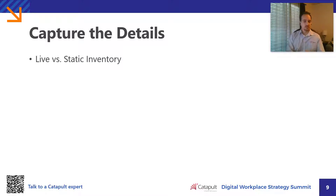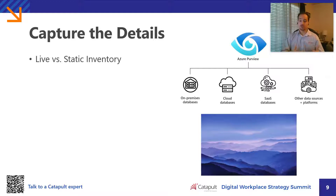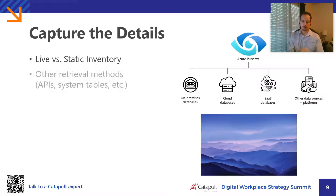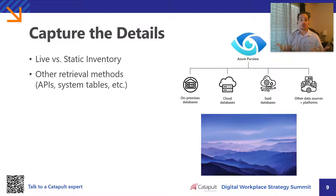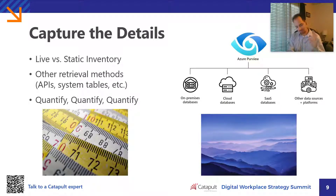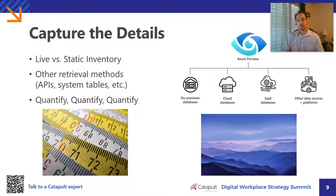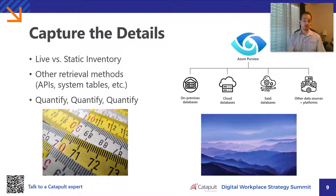Another way to examine the details of your systems is through a live inventory, which can be achieved through Azure Purview. This is a technology that, in short, gives you complete visibility to all the systems within your data landscape. Now, if Purview is not something that's at your fingertips, there are other ways to retrieve this data — native APIs, system tables, and other endpoints that we commonly use. And finally, quantify, quantify, quantify. Getting a live inventory of your data landscape is really useful, but it's very important that this information is quantified. Knowing how much data you have, the volume that exists, and where it exists is really critical to understanding your data landscape.